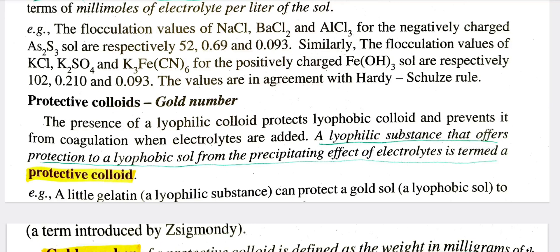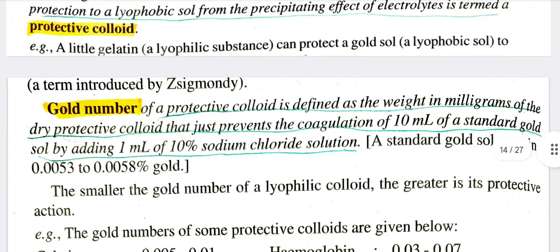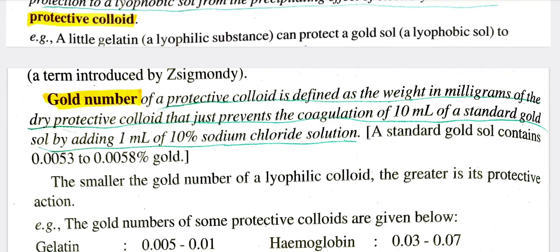For example, a little gelatin can protect a gold sol. The gold number of a protective colloid is defined as the weight in milligrams of the dry protective colloid that just prevents the coagulation of 10 ml of standard gold sol by adding 1 ml of 10% sodium chloride solution.